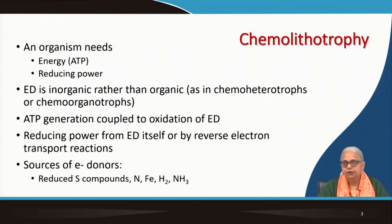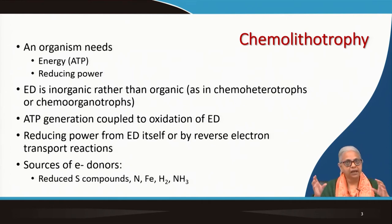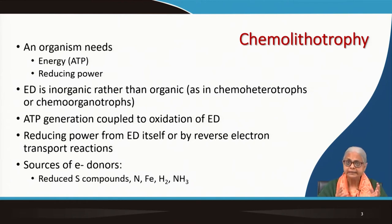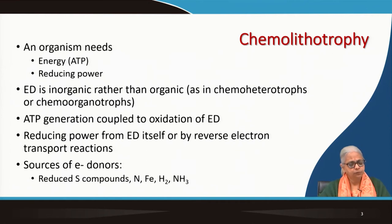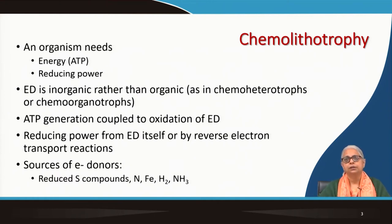What is chemolithotrophy? Any organism needs two things: it needs ATP, which is the chemical energy, and it needs reducing power. This has to be obtained by coupling certain oxidation reactions with other reduction reactions. The coupling of electron donors and electron acceptors is how the organism derives its energy as well as reducing power. The electron donor (ED) can be inorganic rather than organic. You can have organic chemoheterotrophs or chemoorganotrophs, or you can have chemoautotrophs as well. ATP generation is coupled to the oxidation of the electron donors.